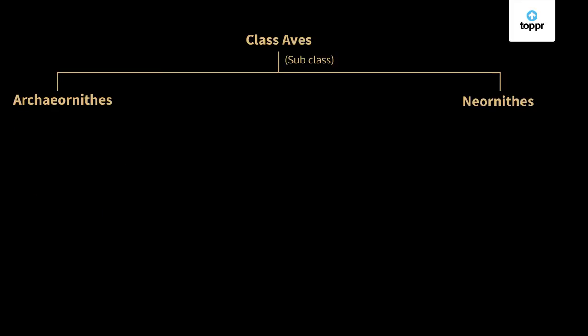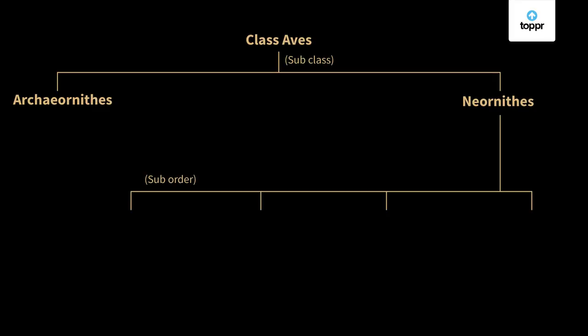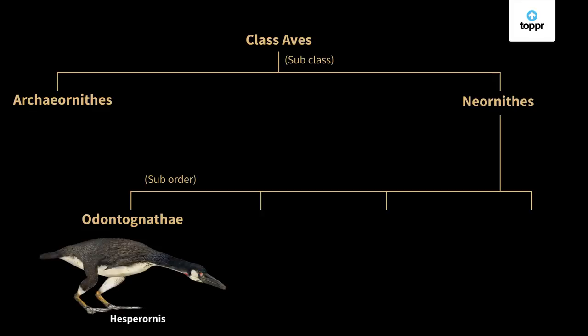The second subclass, Neornithes, includes mostly living animals and extinct animals of the post-Jurassic period. Wings are well-developed and the sternum is bigger with a keel present. Except for some species, most birds are toothless. This subclass is classified under four super orders. The first is Odontognathae — these animals are extinct and had teeth; the keel was also absent. An example is Hesperornis.